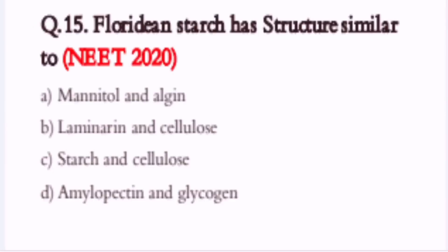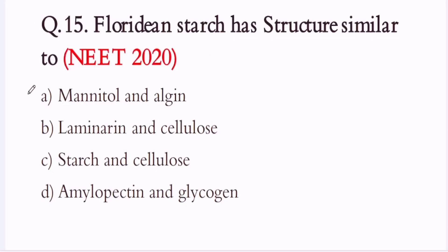Question 15. Floridian starch has structure similar to: A. Mannitol and algine. B. Laminarin and cellulose. C. Starch and cellulose. D. Amylopectin and glycogen. The correct option is D. Amylopectin and glycogen.